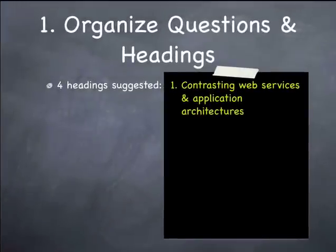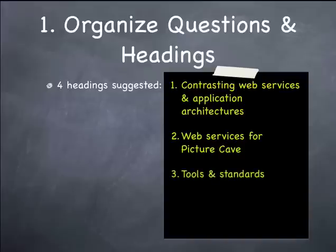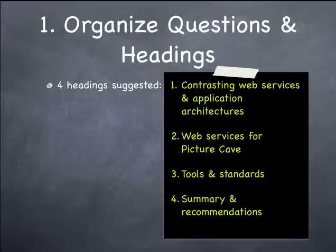The first step is to organize the questions and headings into something you can use in an outliner. The TMA itself suggests four headings: contrasting web services and application architectures, web services for Picture Cave, tools and standards, and the summary and recommendation section. Start by writing these four things down in a Microsoft Word document, an outliner, or even on a piece of paper.